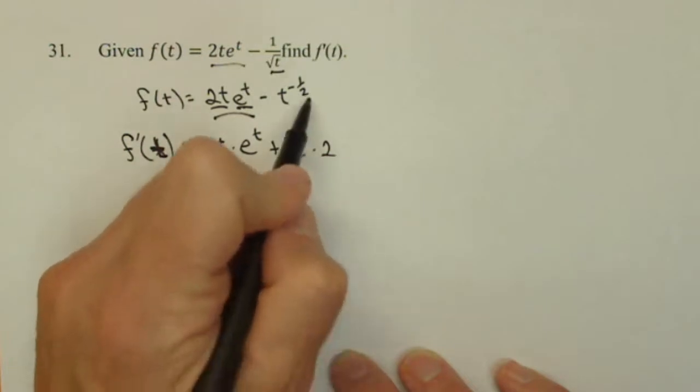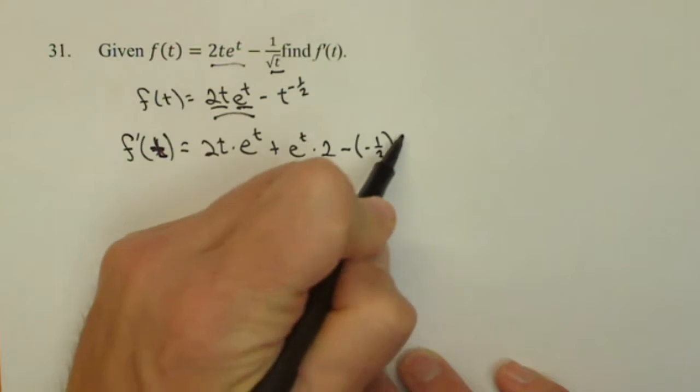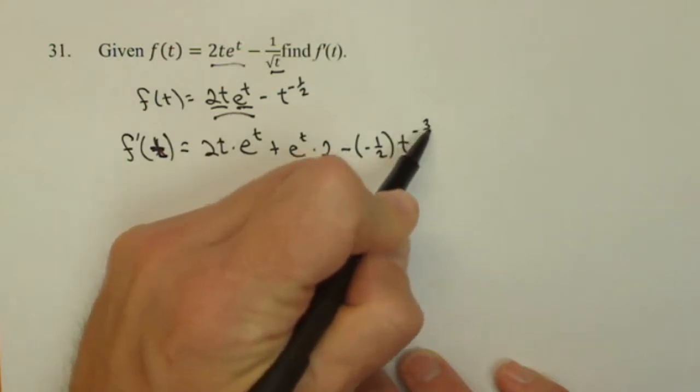Here we've got our power rule. So minus, pull the power in front, negative 1 half, t, decrease the power by 1, so negative 3 halves.